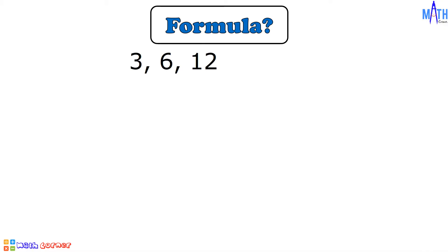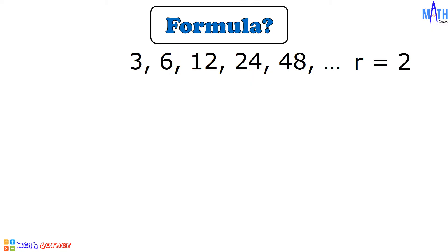Let us use this example of a geometric sequence. We have 3, 6, 12, 24, 48, and so on. The common ratio of this sequence is equal to 2. And we can write each term of this sequence in factored form.